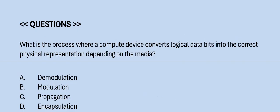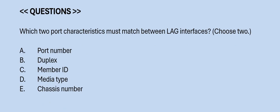Question: What is the process where a compute device converts logical data bits into a correct physical representation depending on the media? Option A: demodulation. Option B: modulation. Option C: propagation. Option D: encapsulation. The correct answer is Option D.